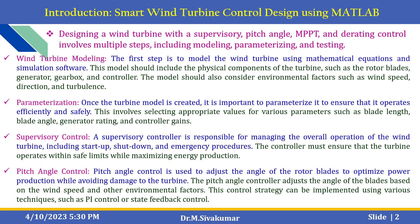The fourth one is pitch angle control. This control is used to adjust the angle of the rotor blades to optimize power production while avoiding damage to the turbine. The pitch angle controller adjusts the blade angle based on wind speed and other environmental factors. This control strategy can be implemented using various techniques, for example a PID controller or state feedback control. Here we are using a state flow machine.